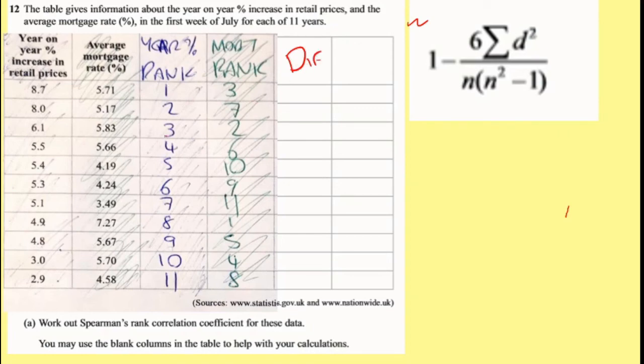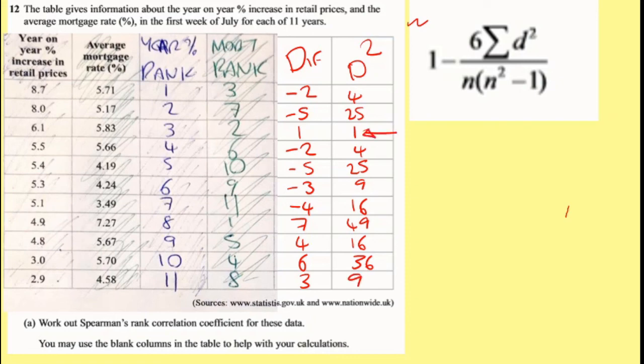Now I need to find the difference of these. Now it doesn't have to do 1 minus 3 or 3 minus 1 because my next stage I'm going to square it anyway. But let's do 1 minus 3 which is minus 2, 2 minus 7 is minus 5, 3 minus 2 is 1, 4 minus 6 is minus 1, 5 minus 10 is minus 5, 6 minus 9 is minus 3, 7 minus 11 is minus 4, 8 minus 1 is 7, 9 minus 5 is 4, 10 minus 4 is 6, 11 minus 8 is 3. And then we just square them. So it really doesn't matter if you mess up your minuses or not. So that's 4, 25, 1, 4, 25, 9, 16, 49, 16, 36, and 9. Be careful with that one there. For some reason people always say 1 squared is 2 and it's not.